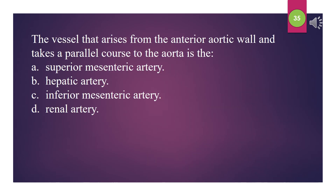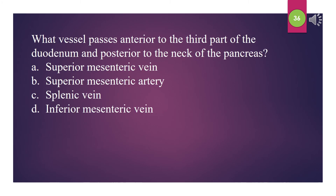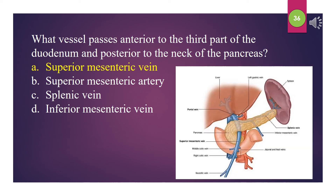The vessel that arises from the anterior aortic wall and takes a parallel course to the aorta is the: A. Superior mesenteric artery. B. Hepatic artery. C. Inferior mesenteric artery. D. Renal artery. The answer is A: Superior mesenteric artery. What vessel passes anterior to the third part of the duodenum and posterior to the neck of the pancreas? A. Superior mesenteric vein. B. Superior mesenteric artery. C. Splenic vein. D. Inferior mesenteric vein. The answer is A: Superior mesenteric vein.